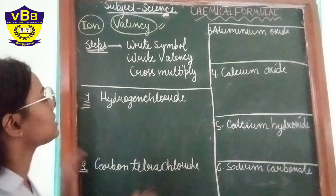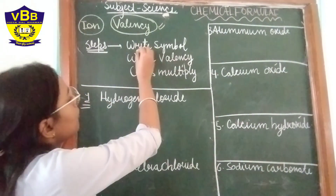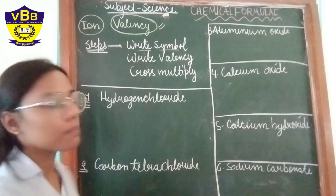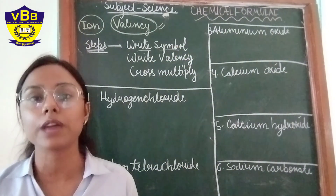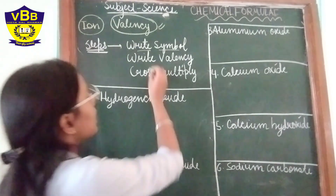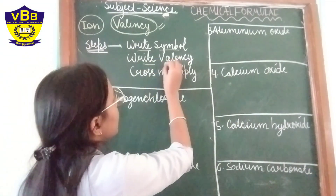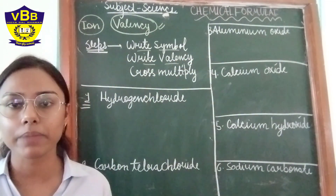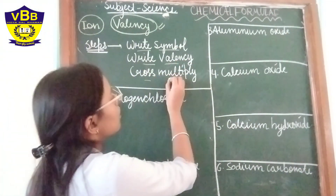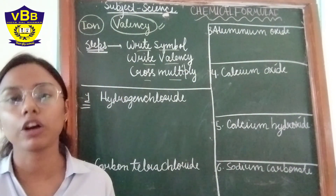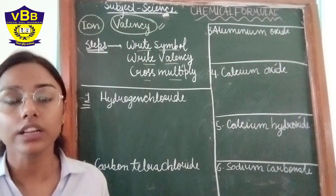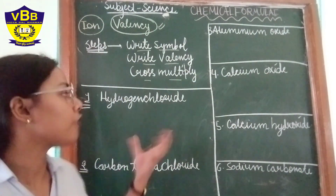Now, to write a chemical formula, first we write the symbol of the elements present in the formula, then we write the valency of each element, and then we cross multiply. Let's understand this with one compound.